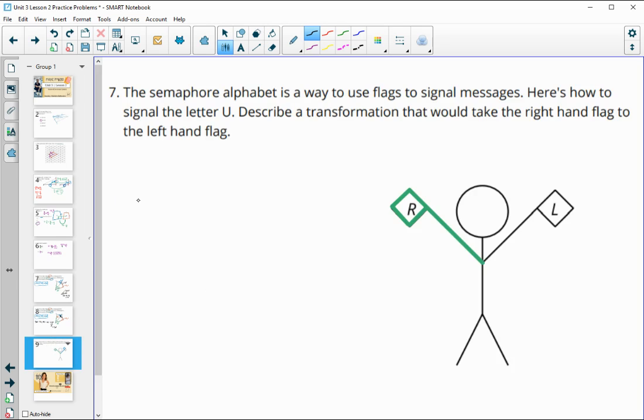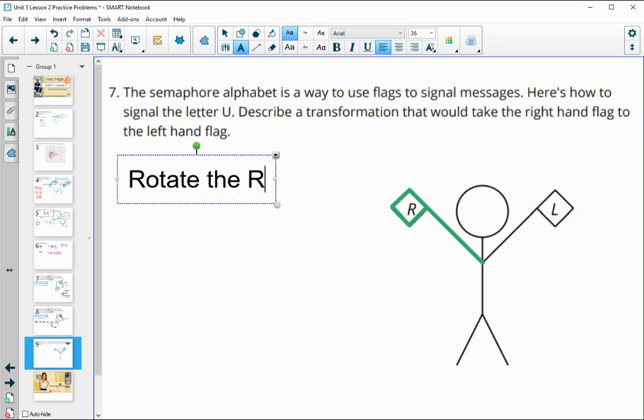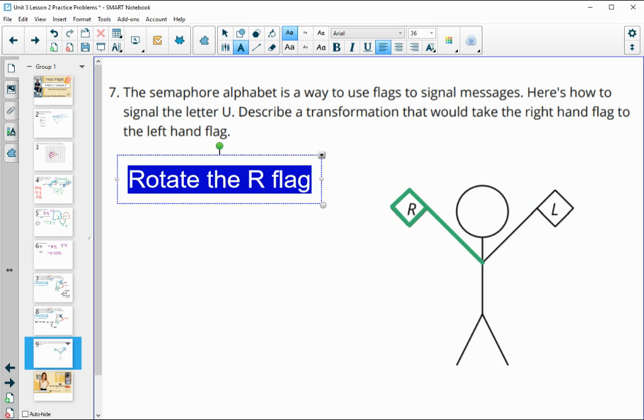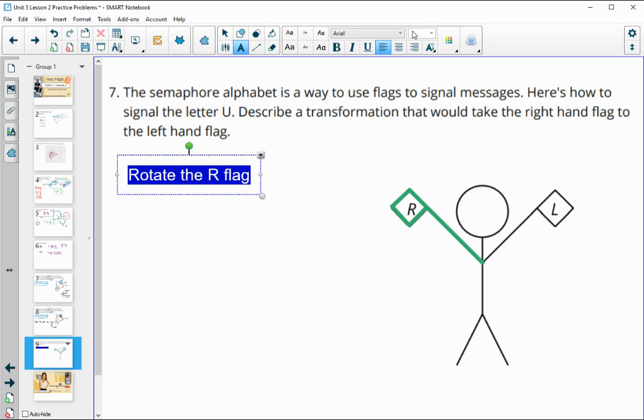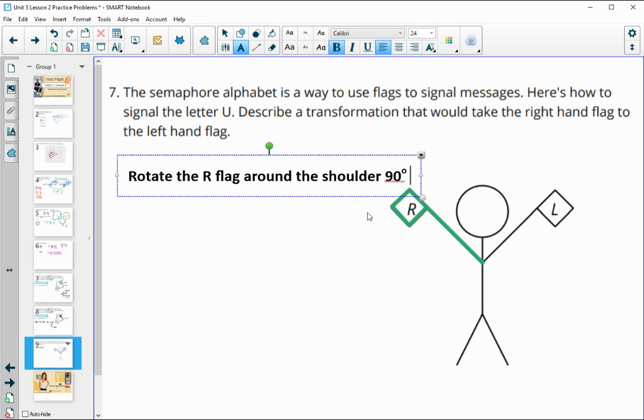Number seven asks us to describe transformations that would take that right hand flag, the green one there, over to the left hand flag. So if we were going to type out some directions here, it looks like we want to rotate that right flag. So let's say rotate the R flag. You could do either direction here. You could go all the way around this way, which would be counterclockwise, or you could go clockwise. I'm going to say rotate the R flag around the shoulder 90 degrees clockwise.